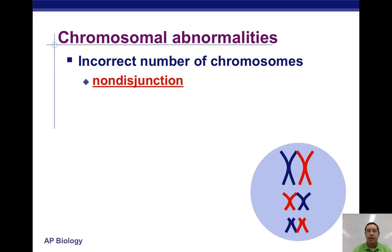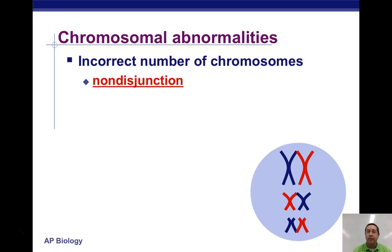This is caused by non-disjunction. Chromosomes are supposed to line up in the center and they're supposed to separate during meiosis. Sometimes in meiosis they don't separate, and they go to one side. Now this cell over here has too many copies of a chromosome, and the one on the other side has not enough copies. When they separate it's called disjoining or disjunction, so when they don't separate we call that non-disjunction.